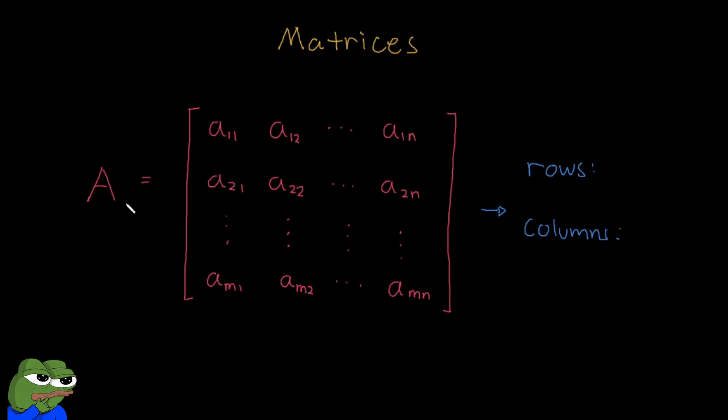Now this is how we represent matrices in general. So this in your screen right now is an M by N matrix. So it has an M number of rows and N number of columns.